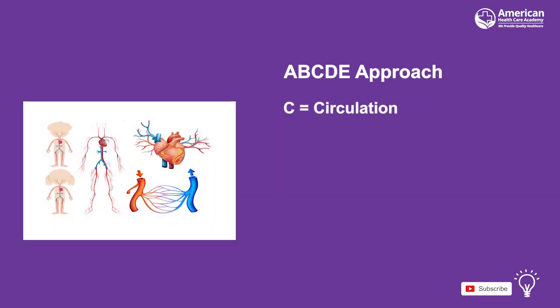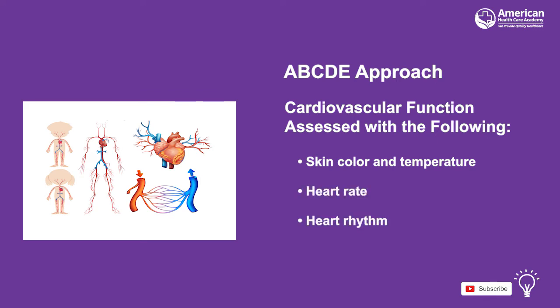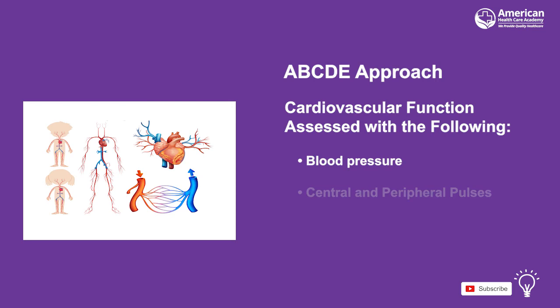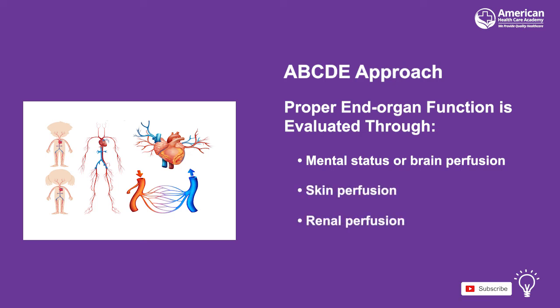The C of the ABCDE approach is for circulation, which includes cardiovascular and end organ function. Proper cardiovascular function can be assessed with the following: skin color and temperature, heart rate, heart rhythm, blood pressure, central and peripheral pulses, and capillary refill time. Proper end organ function is evaluated through mental status or brain perfusion, skin perfusion, and renal perfusion including urine output. For more information on normal and abnormal circulation in a child, please refer to the corresponding chart in this chapter.